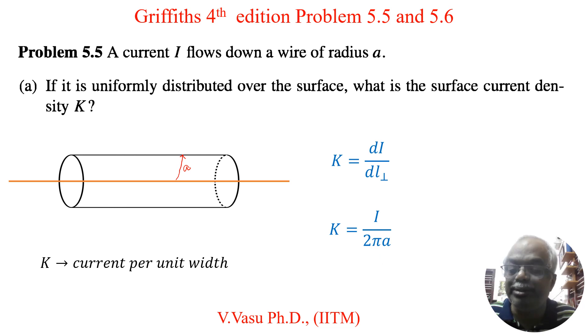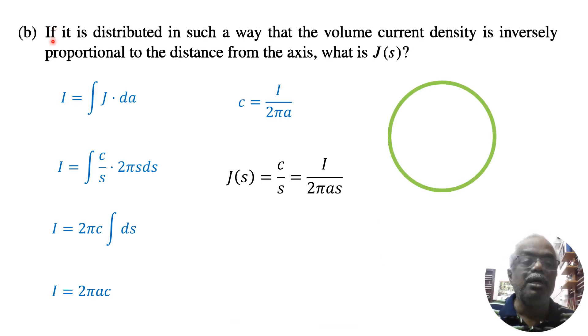Now we will move on to part B. Now part B is if it is distributed in such a way that the volume current density is inversely proportional to the distance from the axis. What is J of S? S is a distance from the axis, that is center. Now by definition, the current I is equal to integral over J dot dA. Here J is given, J is inversely proportional to S.